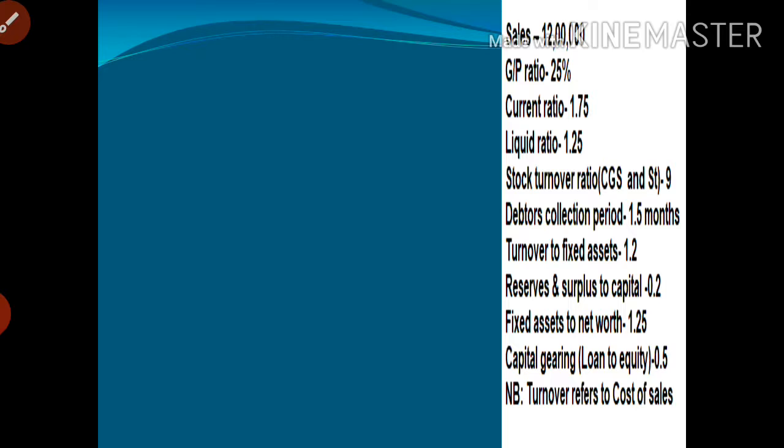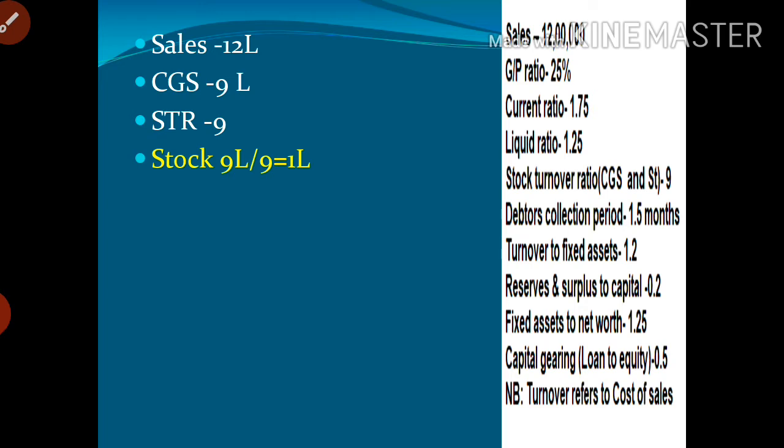The starting point we know is stock. Sales is 12 lakhs and cost of goods sold is 9 lakhs, because 25% is our gross profit ratio — 12 lakhs minus 25% gives a balance of 9 lakhs. Stock turnover ratio is given as 9, so average stock equals cost of goods sold divided by stock turnover ratio: 9 lakhs divided by 9 equals 1 lakh for stock.